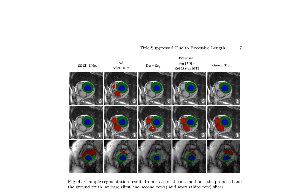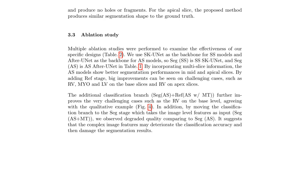The ablation study, outlined in Table 2, examines the effectiveness of specific design components. By employing SKU-NET for single slice models and after U-NET for all slice models, the study reveals superior segmentation performance in mid and apical slices when incorporating multi-slice information. The addition of the refinement stage yields significant improvements in challenging cases such as the right ventricle, myocardium, and left ventricle in base slices, as well as the right ventricle in apex slices. The inclusion of an additional classification branch enhances performance in very challenging cases like RV segmentation in base slices. In contrast, relocating the classification branch to the segmentation stage results in degraded performance, suggesting that complex image features may compromise classification accuracy.